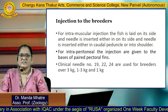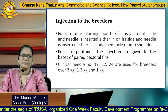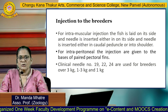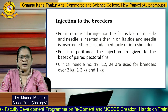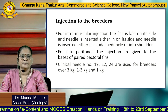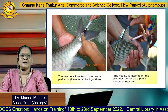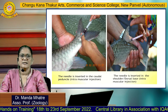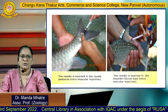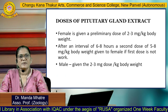For intramuscular injection, the fish is laid on its side and the needle is inserted either in the caudal peduncle or into the shoulder. For intraperitoneal injection, the injections are given at the base of the paired pectoral fin. Clinical needles used for injection are numbers 19, 22, and 24, used for brooders over 3 kg, 1 to 3 kg, and under 1 kg respectively. The needle inserted in the caudal peduncle is the intramuscular injection, while the needle inserted at the shoulder or dorsal base of the pectoral fin is also intramuscular.